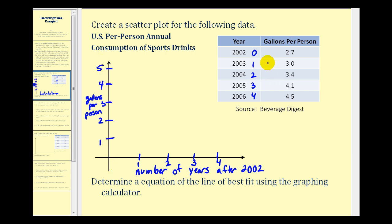Now we'll go ahead and plot the points. The first point is zero, two point seven. One, three, two, three point four, three, four point one, and four, four point five.